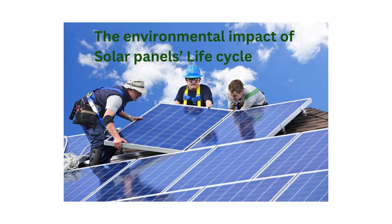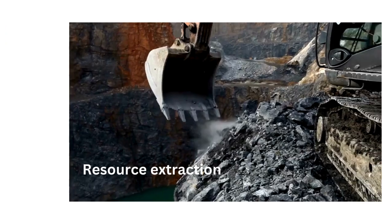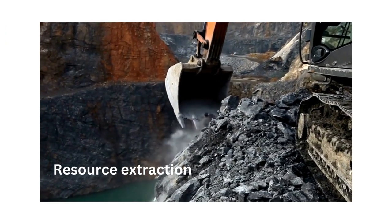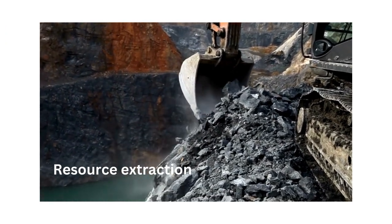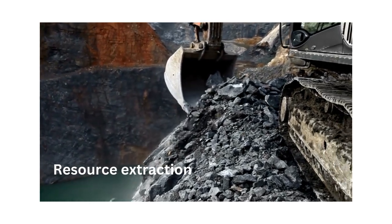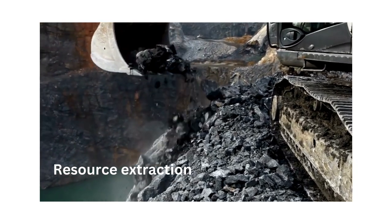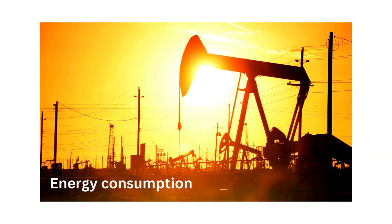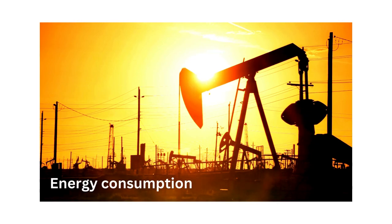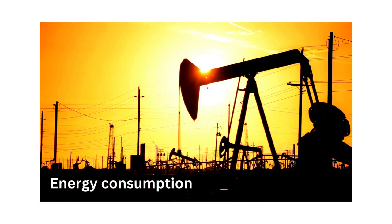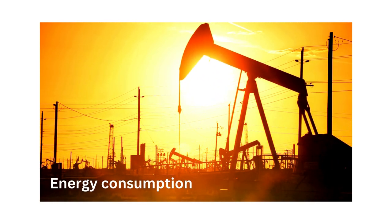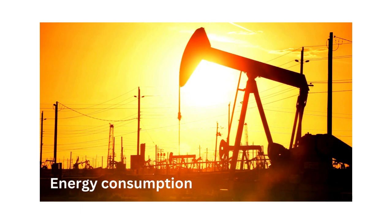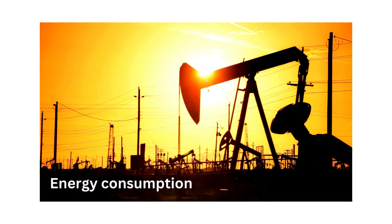For example, the life cycle assessment of solar panels reveals the following types of environmental impact. The production of solar panels involves the extraction of raw materials such as silicon, glass, aluminium, and various metals. The manufacturing process for solar panels requires energy, typically derived from fossil fuels or other sources. While this energy consumption is relatively low compared to the energy produced over the lifetime of the panels, it still contributes to greenhouse gas emissions and environmental impacts.